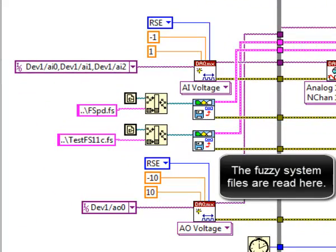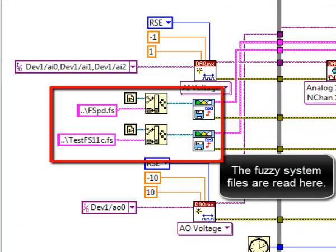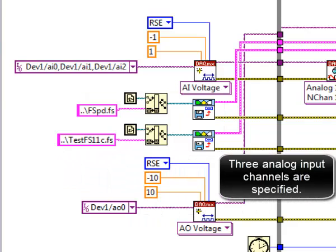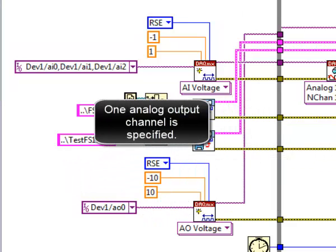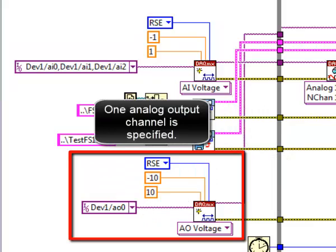The fuzzy system files are read here. Three analog input channels are specified. One analog output channel is specified.